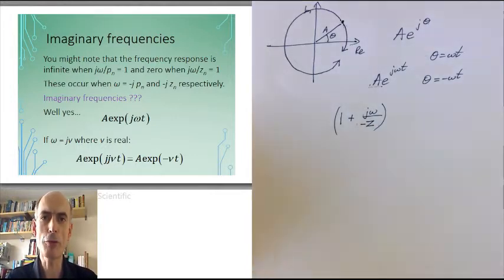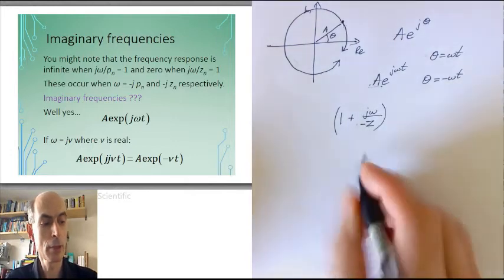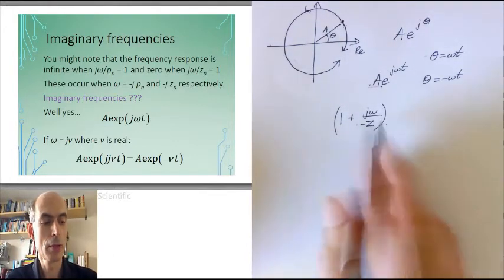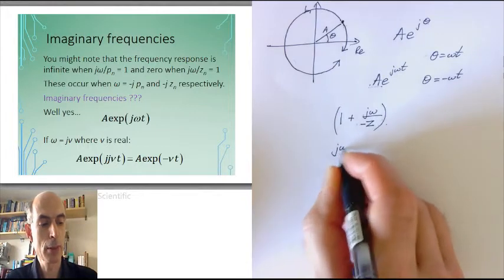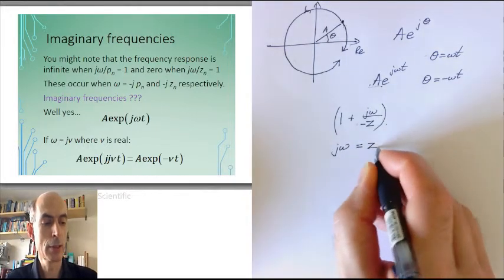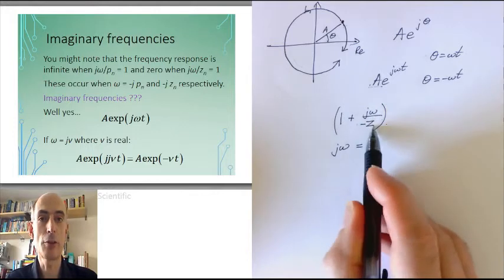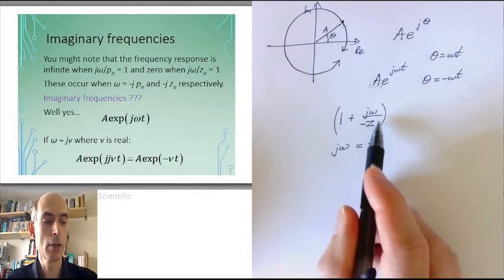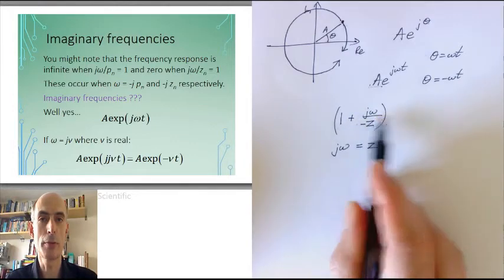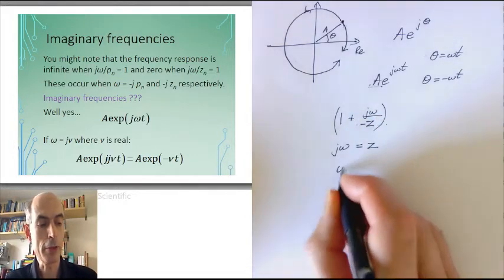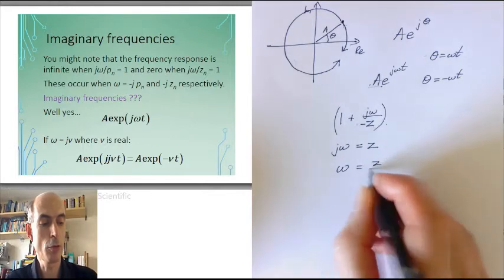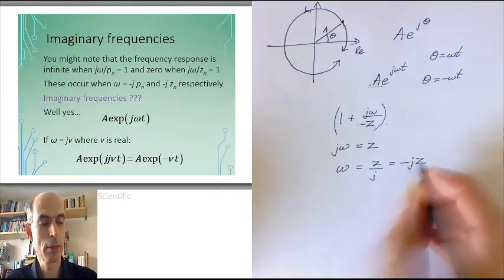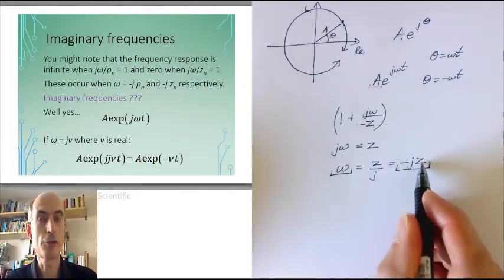Right, what frequency? Well, at the zero, this term here would evaluate to zero, which means that j omega must be equal to z. So that j omega over minus z is minus one, and the whole term evaluates to zero. One plus minus one is zero. And this means that omega is z over j, or minus j times z. So that is the frequency of the zero.